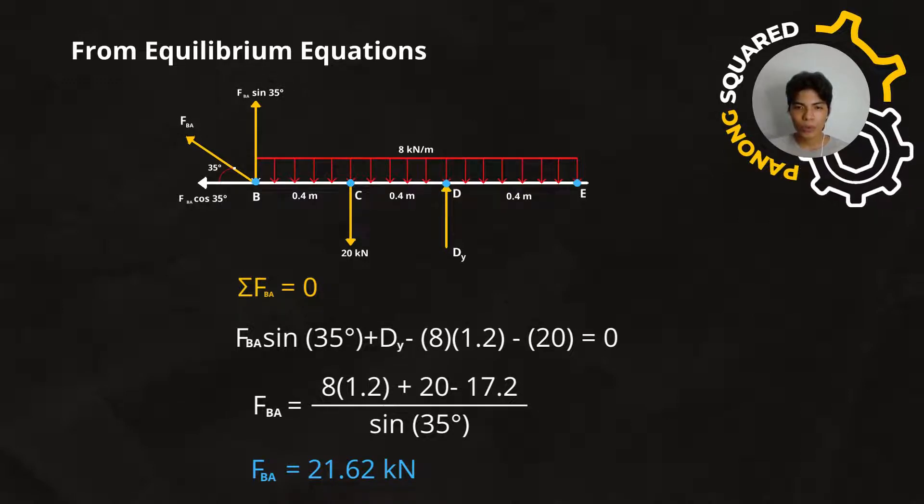The next step is to transpose to the right side, the Dy minus 8 times 1.2 minus 20, and then divide both sides by sin(35°). So, we now have FBA is equal to 8 times 1.2 plus 20 minus 17.2.